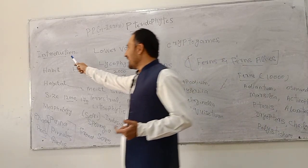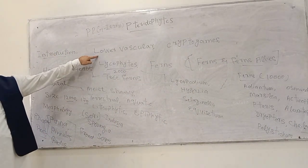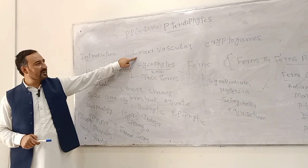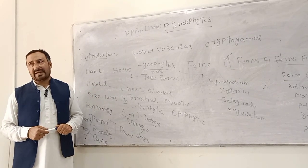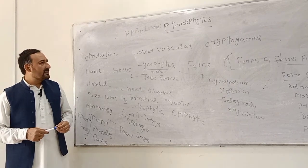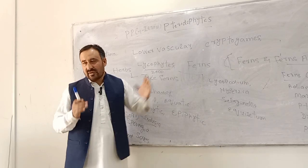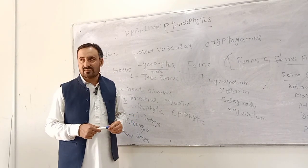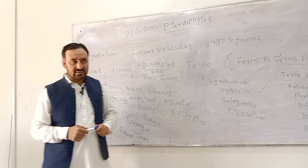As you know, pteridophytes are the lower vascular plants. They have xylem and phloem. They have a well-developed root, stem and leaf, also having rhizoids. They are also known as cryptogams. The bryophytes and pteridophytes are combinedly known as cryptogams. Crypto means hidden and gamy means marriage.